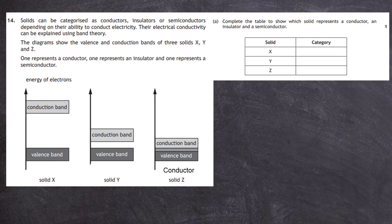Next, we go to the opposite extreme and look for a valence band that is separated from the conduction band by quite a large energy gap. If the valence band is full, the electrons cannot get into the conduction band because of that large energy gap, so there will be no conduction — this is an insulator. This diagram here, which has the valence band separated from the conduction band by a big energy gap, represents the insulator.